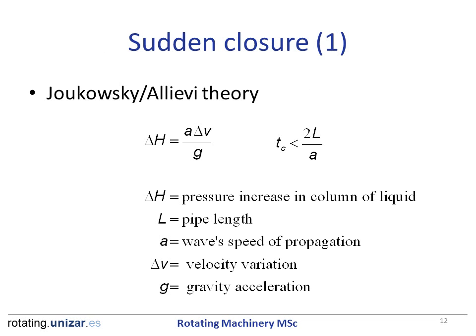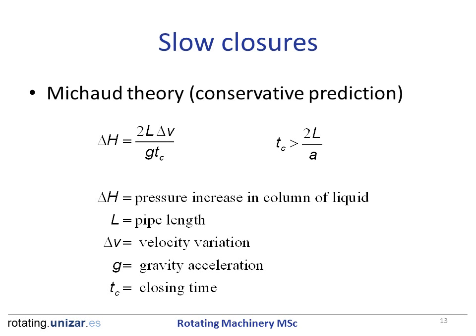For sudden closures, the pressure variation is estimated according to the Joukowsky-Alievi theory. In that case, the variation in pressure expressed in column of liquid equals the celerity times the velocity variation divided by the gravitational acceleration. In slow closures, Michaud's theory estimates that the pressure variation expressed in column of liquid equals twice the length of the pipe times the variation of the velocity, divided by the acceleration of gravity and the closing time.